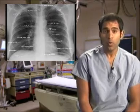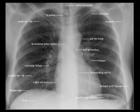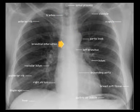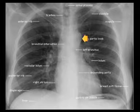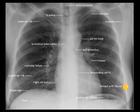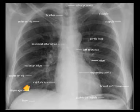The chest radiograph can show multiple anatomic pathology. As listed here, one can see the spinal column, the trachea, the clavicles, scapula, the ribs, the bronchus, as well as the carina, the aortic knob, the pulmonary hilum, the descending aorta, and certain soft tissue. Also very importantly, the diaphragm and the superior aspect of the intestinal contents.